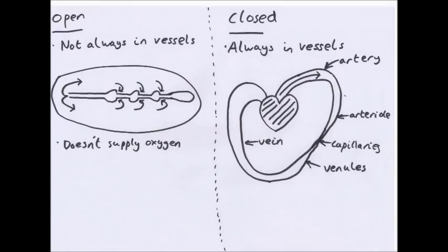Another way of classifying circulatory systems is whether they are open or closed. Open means blood is not always contained in vessels; closed means it always is. Closed is what we have in mammals — blood goes from the heart to arteries, then arterioles, then capillaries, then venules, then veins, and back to the heart. In an open system, found in insects, the heart releases blood into the body cavity and it eventually flows back into the chambers. Each chamber has a valve to prevent backflow.